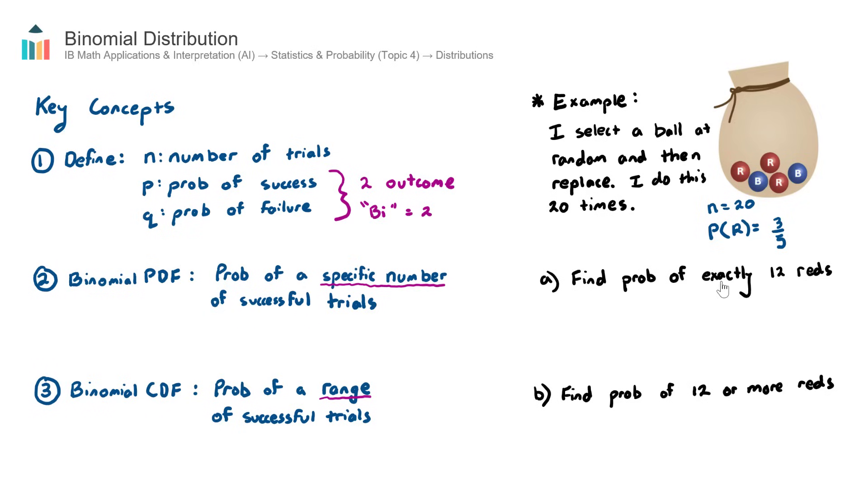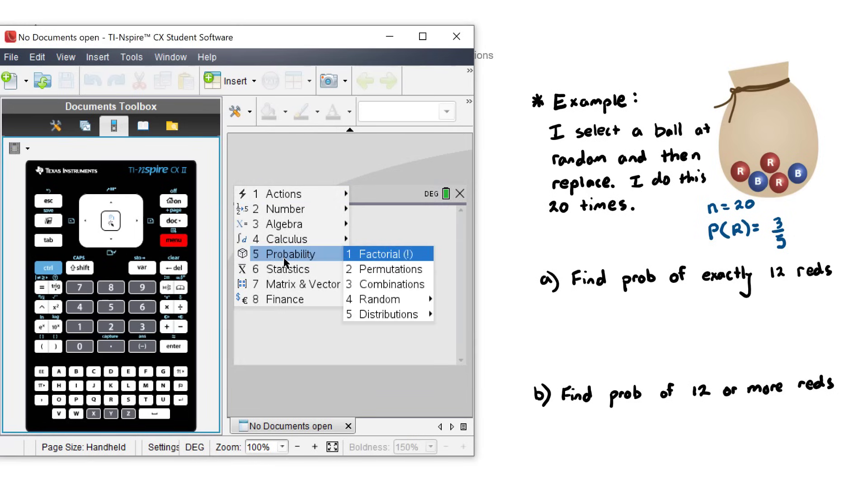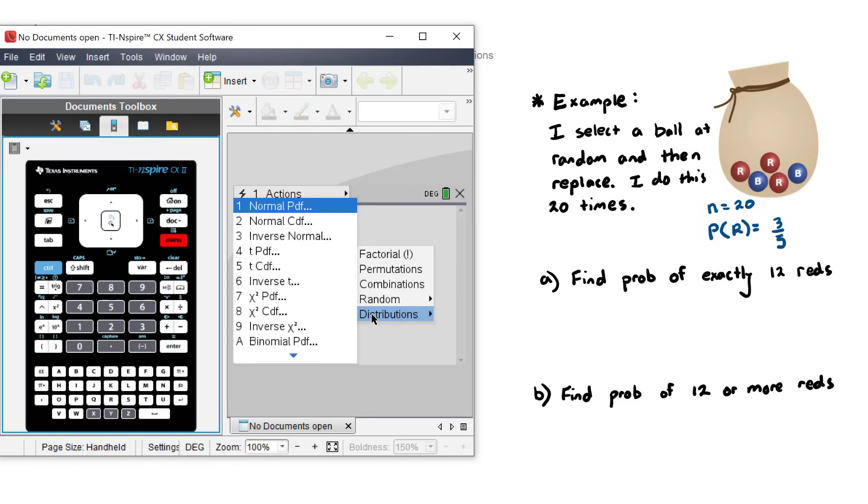In order to find the probability of an exact number of successful trials, we'll use what's called the binomial PDF command on our calculator. So that's for a specific number of successful trials. And in our case here, our specific number is 12 out of the 20. Now, to find the binomial PDF command, we go menu, number five, probability, number five, distributions. And if you go down here towards the bottom of the screen, you'll see there's two options here, binomial PDF, and binomial CDF. They're the two commands that you'll need to use for binomial distribution questions. Binomial PDF is for a specific number of successful trials. So let's go ahead and choose that one.